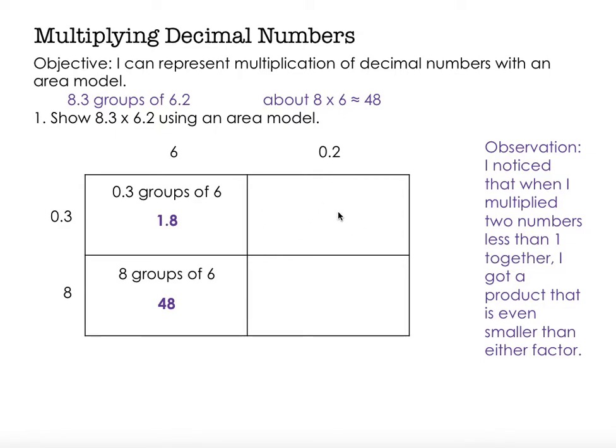I'm going to move over here, where I will have 3 tenths groups of 2 tenths, and this is where my observation comes in handy. So I notice that when I multiply two numbers less than 1, like 3 tenths and 2 tenths, I'm going to get a product that's smaller than either one of these. So when I go ahead and multiply these, and I think to myself,